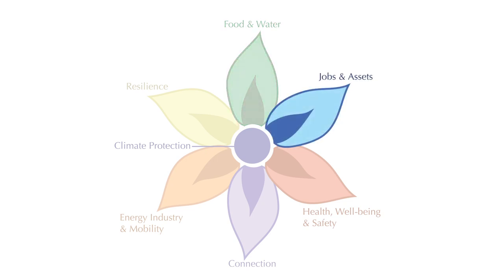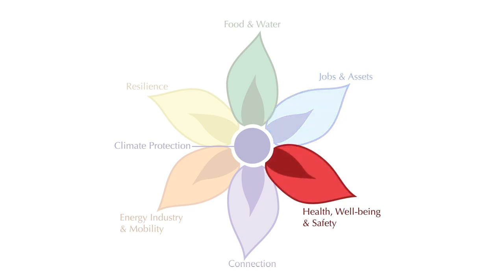This blue petal represents economic benefits. This might include policies that create jobs and business opportunities, help people save more money, or improve wages. The red petal represents health, well-being, and safety. Any project that helps keep people safe or keeps people physically and emotionally healthy, such as green space in a city, would be represented by this petal.